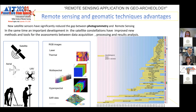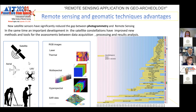New satellite sensors have significantly reduced the gap between classic photogrammetry and remote sensing. In fact, the sensors are mounted on moving vehicles called platforms, such as the classic aircraft. Now we can have UAVs and a lot of satellites — constellation satellites — and at the same time, they can be used in static mode. So you can choose from a variety of vehicles and sensors.